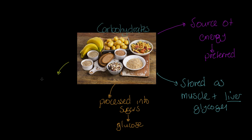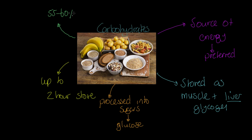We've got up to a two-hour store, so consider activities that go longer than two hours — road cycling or marathon running — they're going to need some kind of refuelling strategy to get glycogen back into the body. As a general rule of thumb, varying person to person and athlete to athlete, we're looking at about 55 to 60 percent of dietary intake being in the form of carbohydrates. The key point: energy and the preferred energy source in the human body.